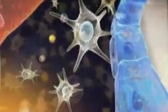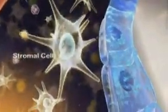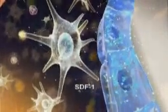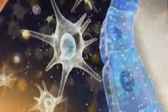During normal stem cell function, two types of cells in the bone marrow, called stromal cells and osteoblasts, produce a chemotactic protein called SDF1 that attracts stem cells.